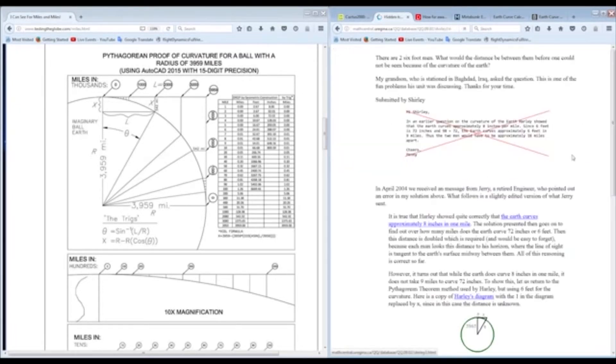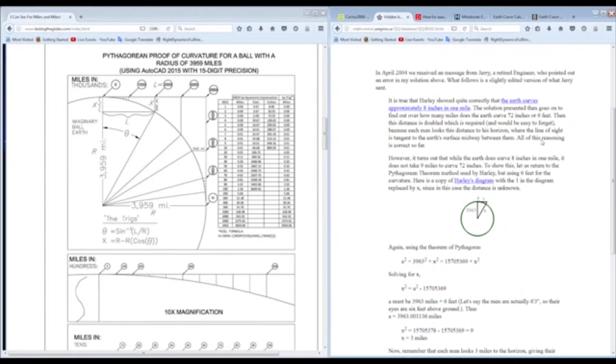So you click on this, and there's an interesting question posed here at the top. There are two 6-foot men. What would the distance be between them before one could not be seen because of the curvature of the Earth? This person Shirley had a grandson who was stationed in Baghdad, Iraq, who was asking the question.